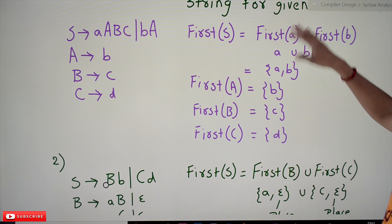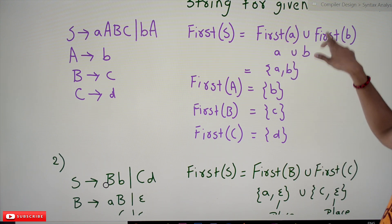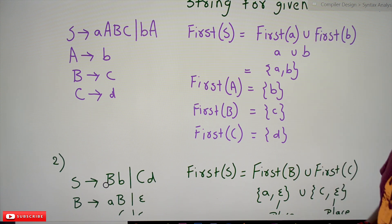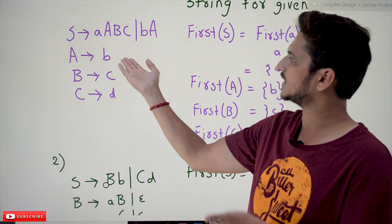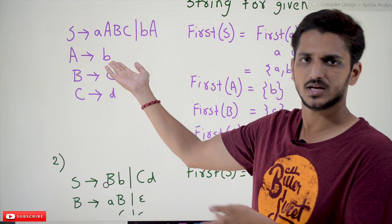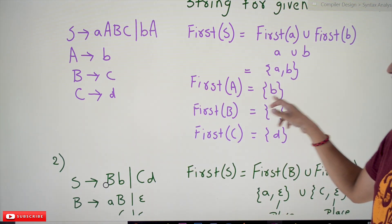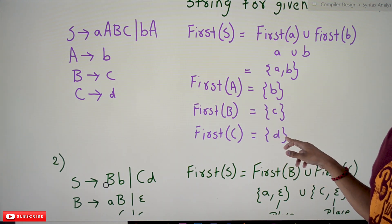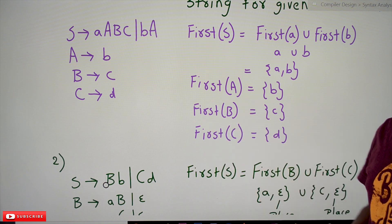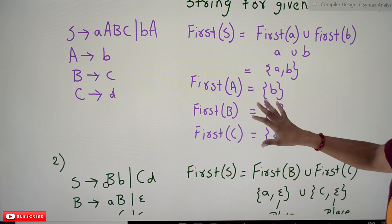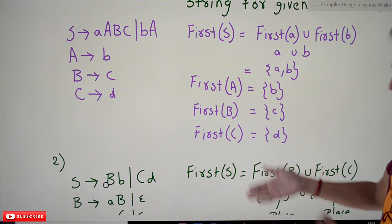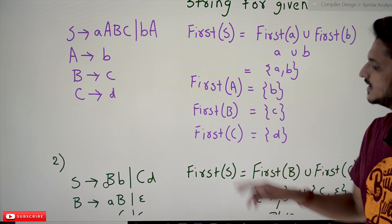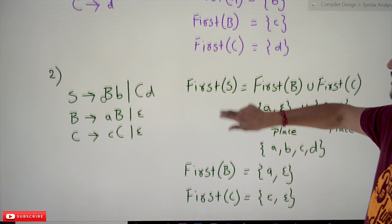From next onwards we are not going to show FIRST(a) union FIRST(b) step-by-step like that. FIRST(A) = {b} since 'b' is terminal. FIRST(B) = {c}. FIRST(C) = {d}. This is how we calculate FIRST for all non-terminals. This was a simple example; our next example will be a bit more complex.